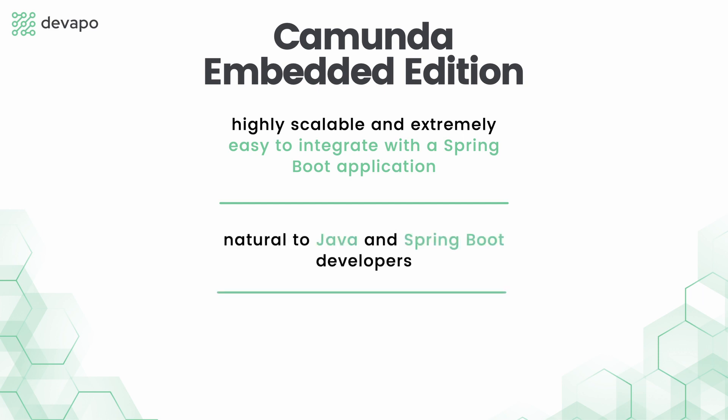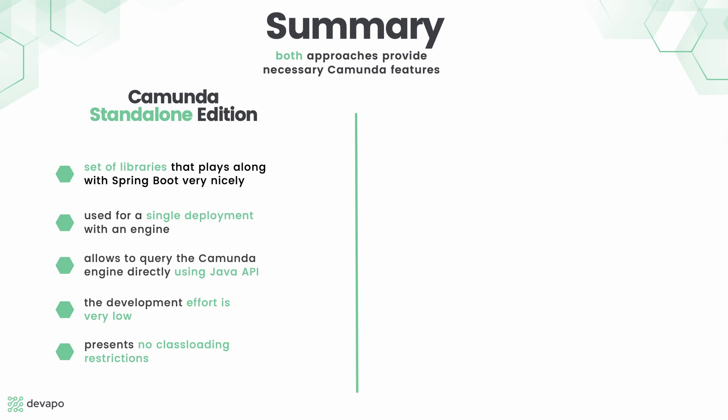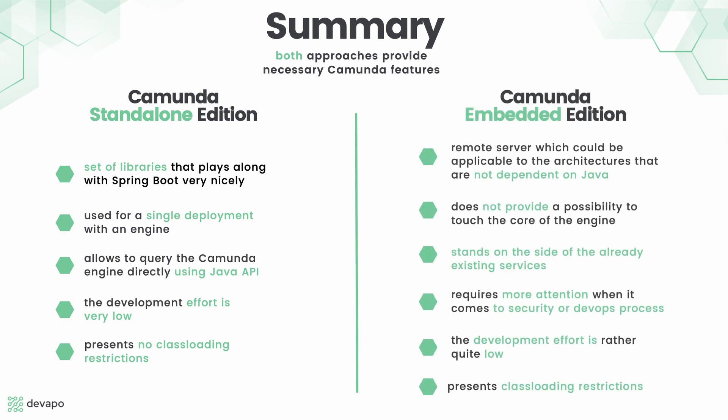This solution might also feel more natural to Java and Spring Boot developers. Both approaches provide necessary Camunda capabilities like web apps, the core engine, REST API, and others. From the application point of view, the embedded edition is a set of libraries that plays along with Spring Boot very nicely. It is also used whenever you want a single deployment with an engine. Since it allows developers to query the Camunda engine directly using the Java API, the development effort is very low and it presents no class loading restrictions.